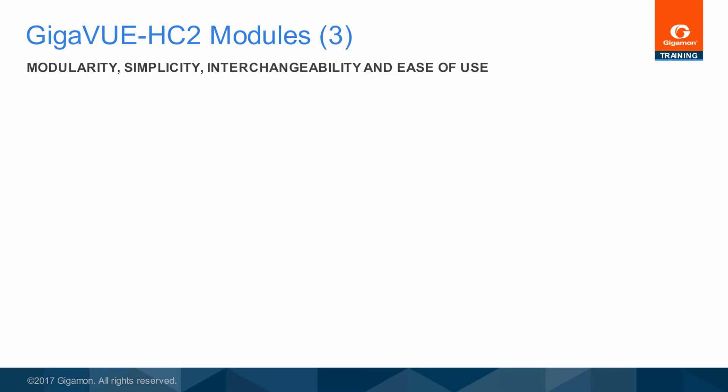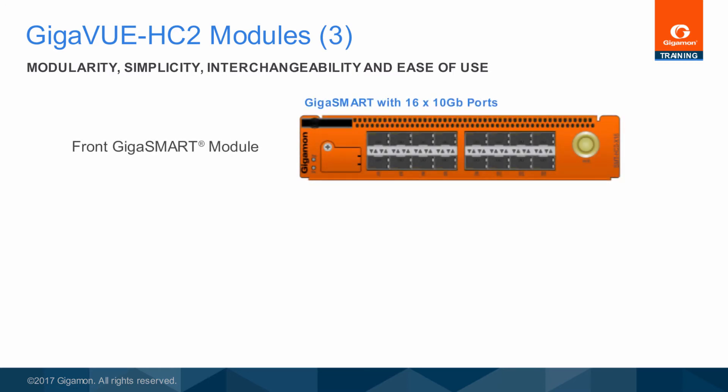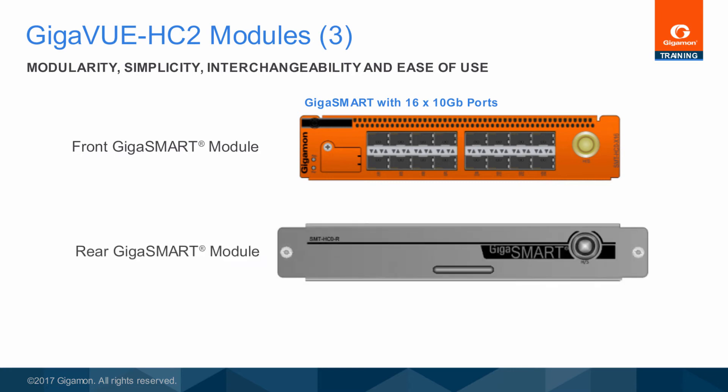There are two GigaSmart modules. The first is a 16x10 gigabit SFP-plus module with 40 gigabit of GigaSmart functionality. A Gigaview HC2 will support up to four GigaSmart front modules simultaneously, and each of the ports may be used for any normal visibility fabric function. The rear GigaSmart module also provides 40 gigabit of GigaSmart functionality, but has no additional ports. Together, a system fully populated with GigaSmart modules supports up to 200 gigabit of GigaSmart functionality and has 64 multi-purpose ports.